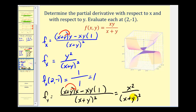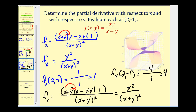Evaluating at the point (2, -1): the denominator is (2 + (-1)) squared = 1, and the numerator is 2 squared = 4. So the slope of the tangent line in the x direction is positive 1, and the slope in the y direction is positive 4.